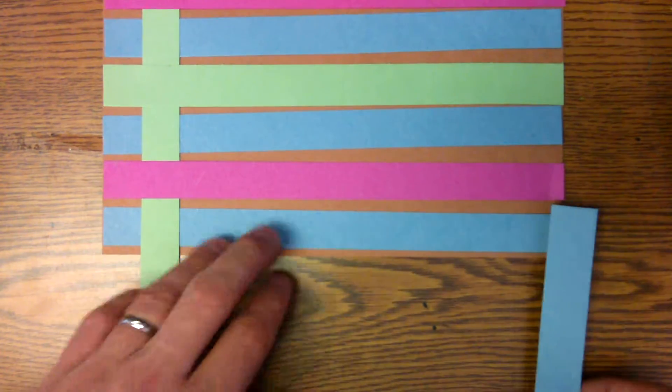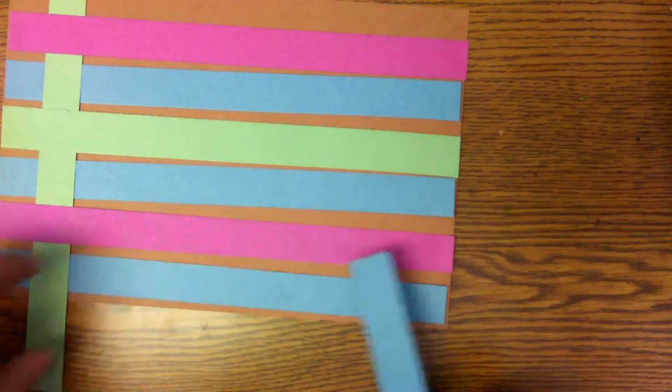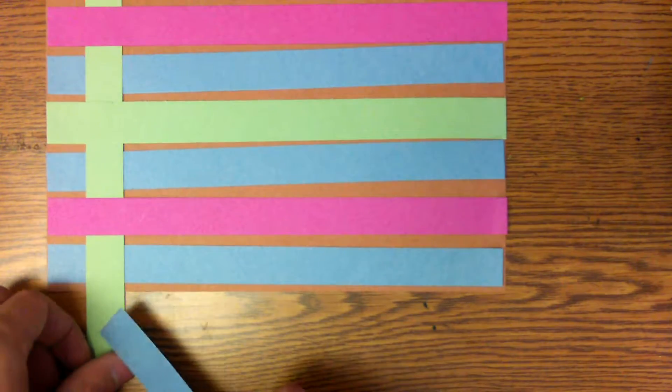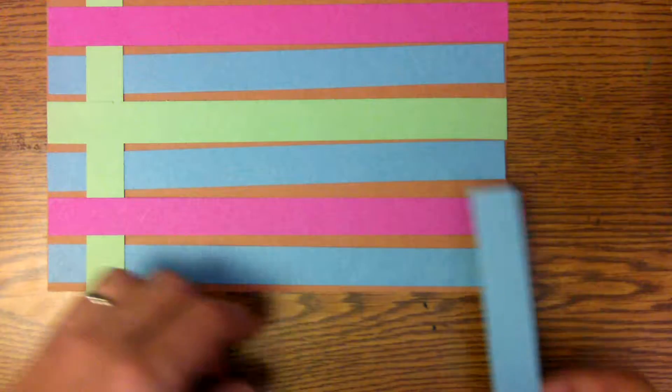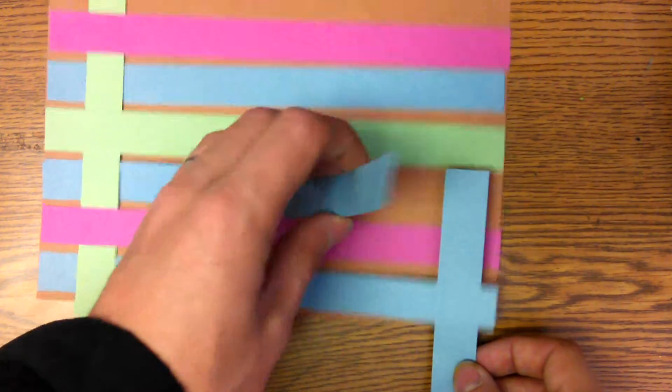So another trick is to actually go over and under on this open side, and you've got to go opposite from the first one. So last time we went over, under, over, under, so this time we got to go under, over, under.